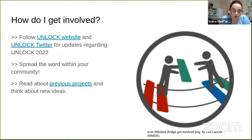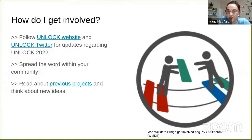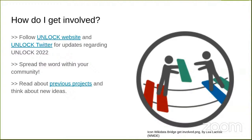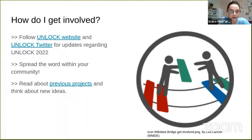Previous projects are important because some of them might be interesting for your country even outside of the Unlock project — it's an inspiration in another way as well. Philip noted that searching for the Unlock Twitter account doesn't give the result you're looking for. We have the link in the presentation, and we'll put it in the Wikimedia Commons category for the CEE presentation so people can find the right link. We have the Unlock website, the Unlock Twitter account, and previous projects listed so you can read and explore.